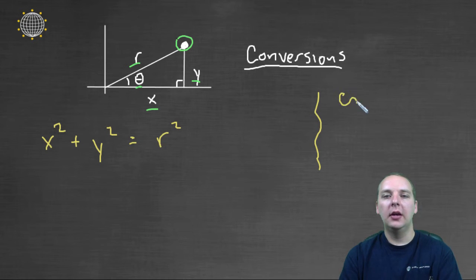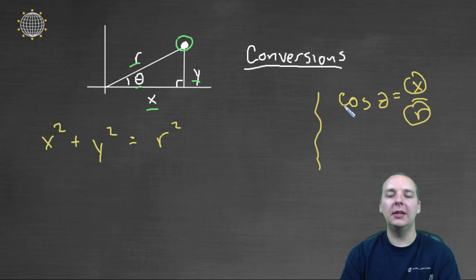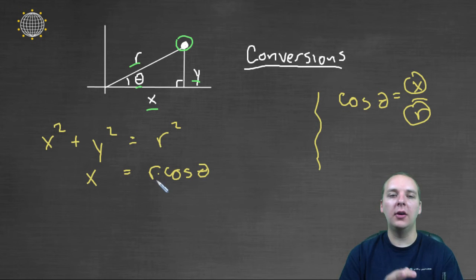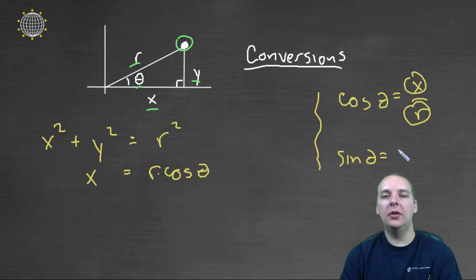Alright, so for example, I know that cosine of theta is adjacent over hypotenuse. Now this is no good, because this has x's paired with r's. So let me multiply r to the left hand side, and that would give us x equals r cosine theta. That's a great conversion, because that way if you have an r and a theta, you can get the x coordinate. In a similar way, sine of theta would be y over r, so the y would equal r sine theta. That's a great conversion.